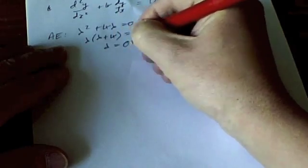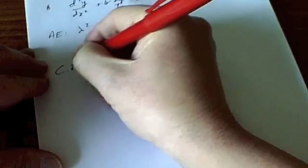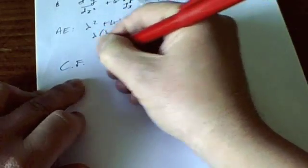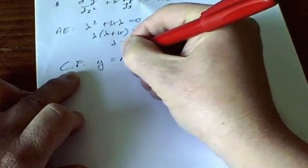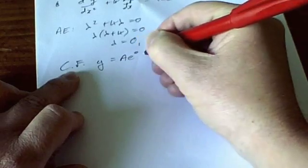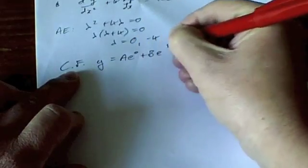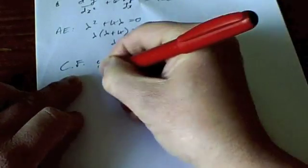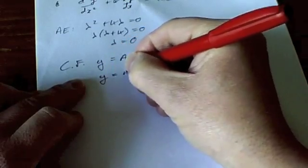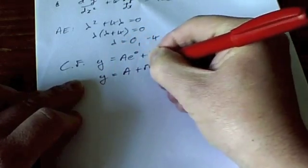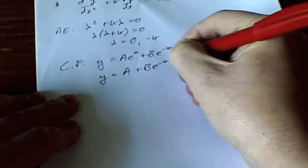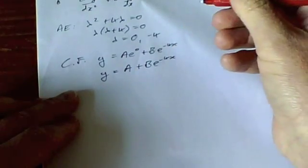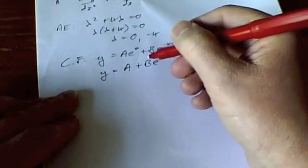Lambda times lambda plus 4 equals 0, so lambda is going to equal 0 or minus 4. That gives me a complementary function then of y equals Ae^0 plus Be^(-4x) which obviously is much more simply expressed as y equals A plus Be^(-4x). So complementary function at that point.